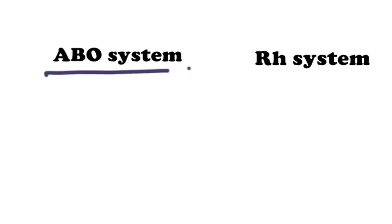There are 30 commonly occurring antigens and hundreds of other rare antigens, but two of them cause blood transfusion reactions much more than others. They are the ABO system of antigens and the RH system. So we have two commonly occurring blood group systems: ABO and RH.